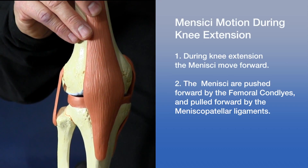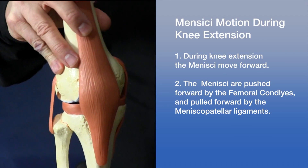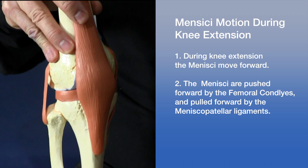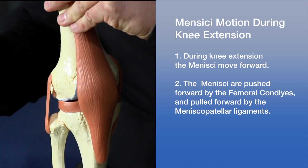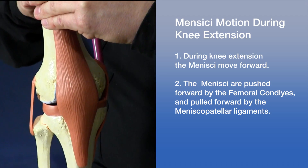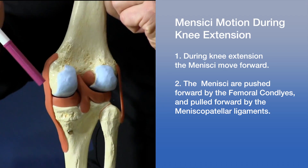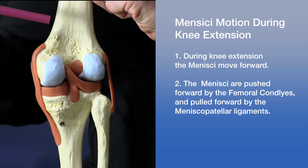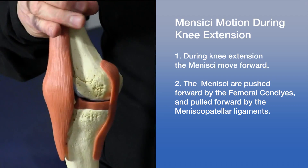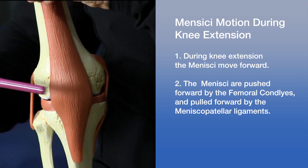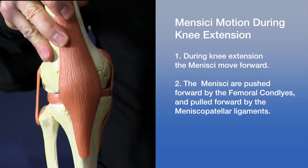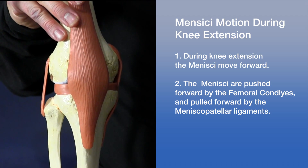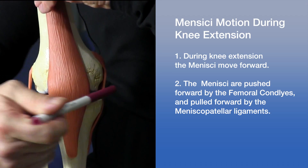Let's talk about meniscal motion. During knee extension, the menisci move forward, being pushed forward by the femoral condyles and also being pulled forward by the meniscal patellar ligaments. So as the leg is straightening out, the menisci are being pushed forward by the femoral condyles and pulled forward by the meniscal patellar ligaments, which attach on each side.